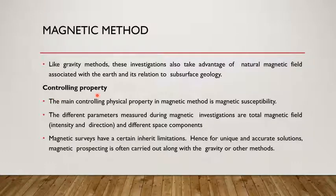The main controlling property is magnetic susceptibility. The different parameters measured during magnetic investigation are total magnetic field, that is intensity and direction, and different space components. Magnetic surveys have certain inherent limitations. Hence, for unique and accurate solutions, magnetic prospecting is often carried out along with gravity methods.